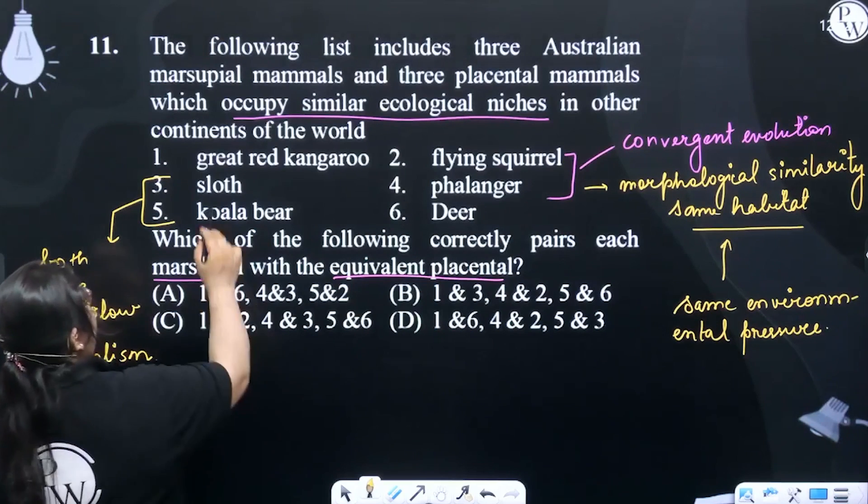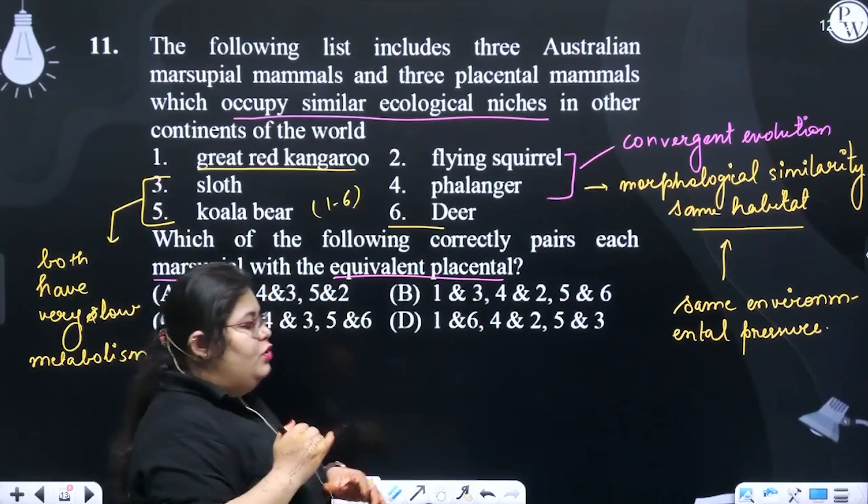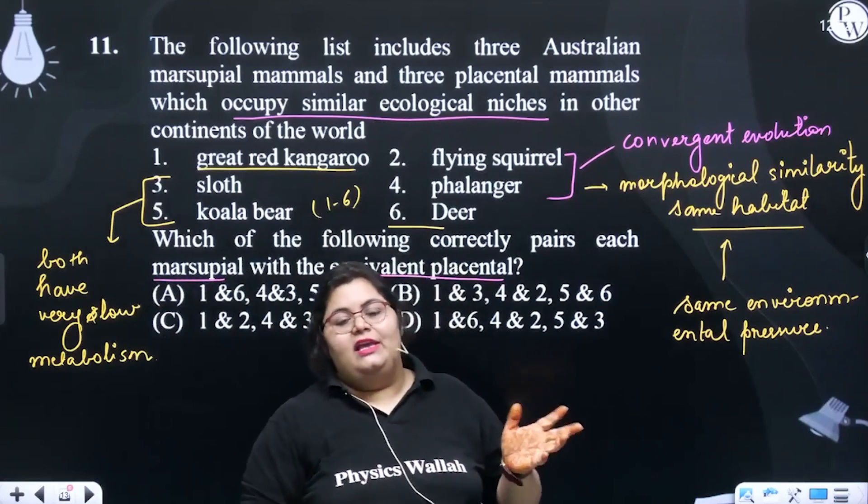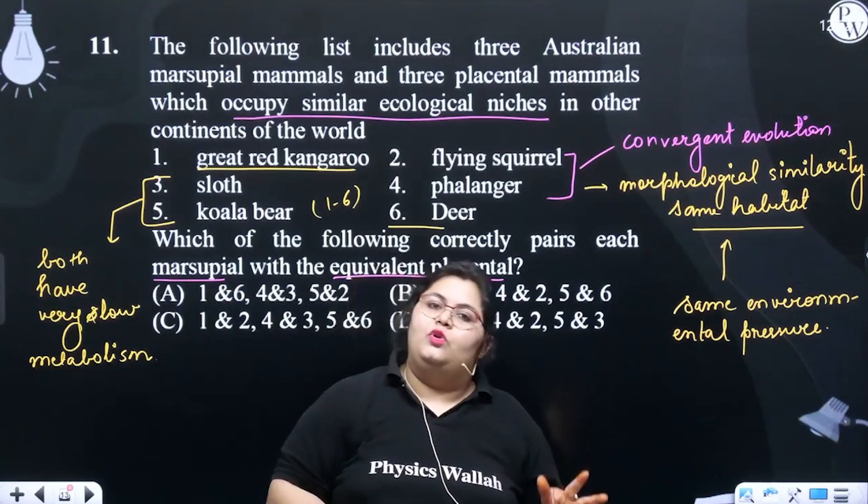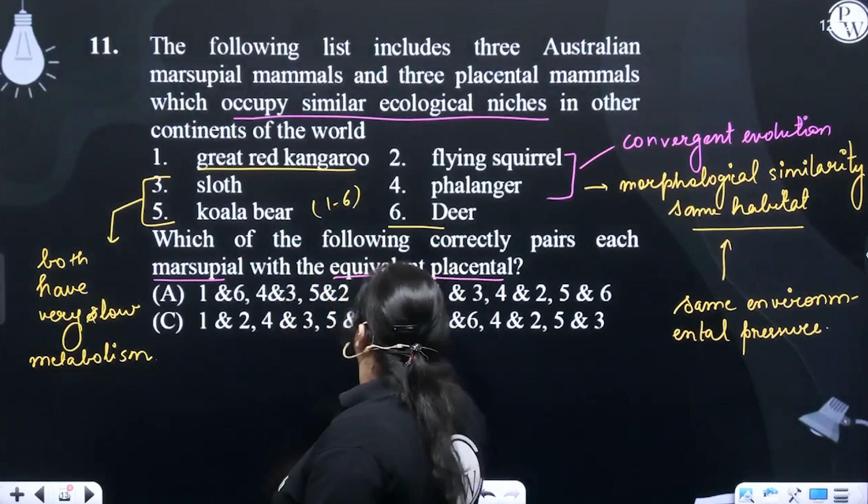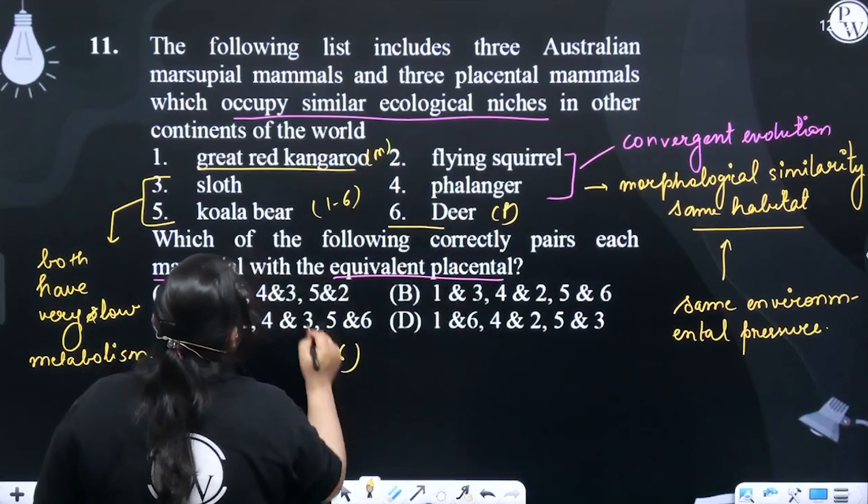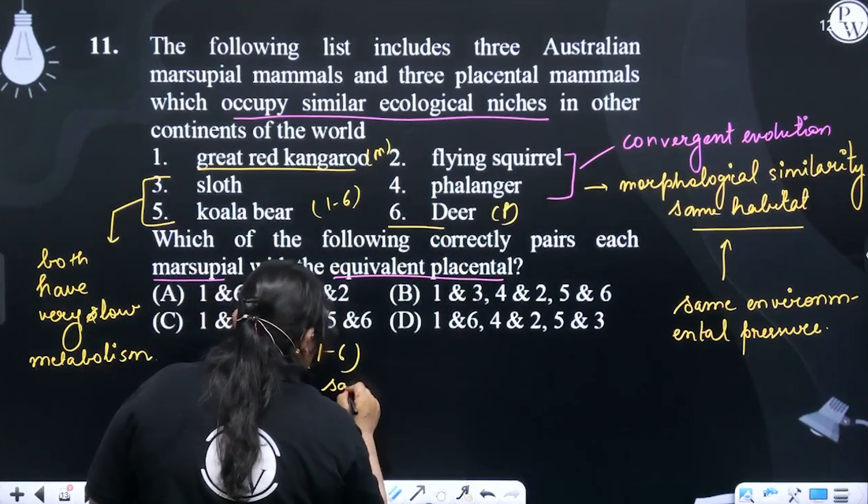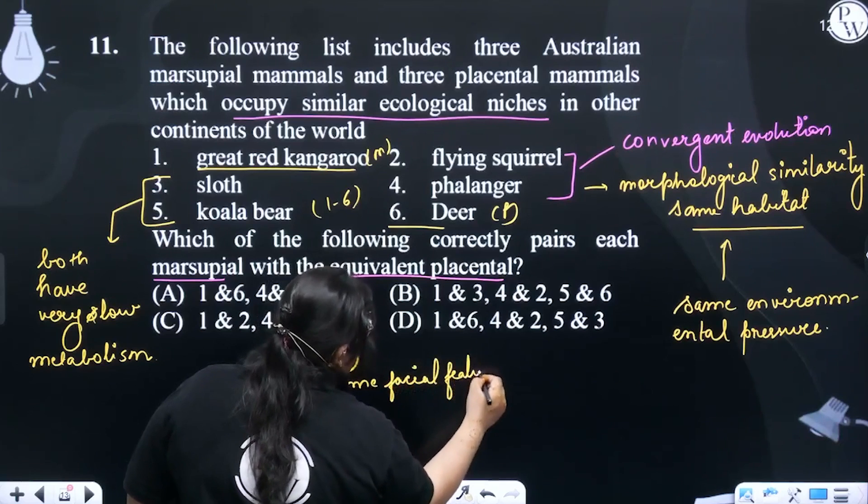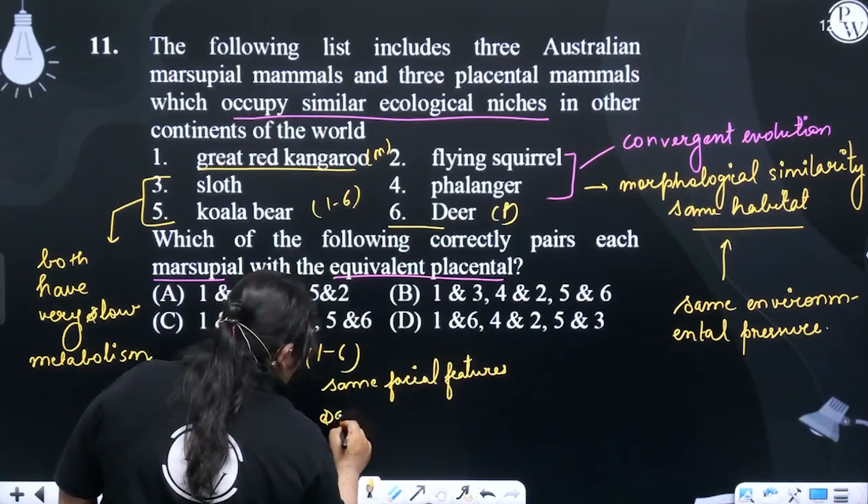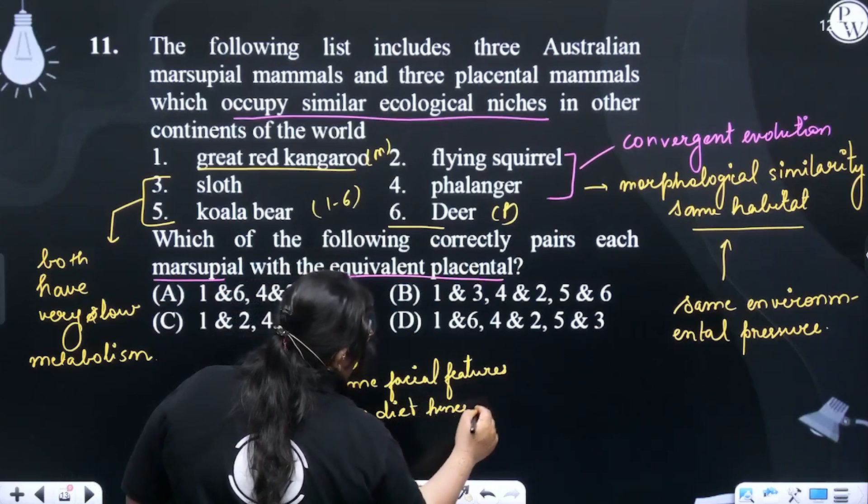Lastly, we are left with the great red kangaroo and deer, one with six. They have the same type of teeth, similar facial features, and same type of environment. We know that deer is placental and kangaroo is marsupial. So in case of one and six, they have same facial features, same diet, and hence they have same teeth as well.